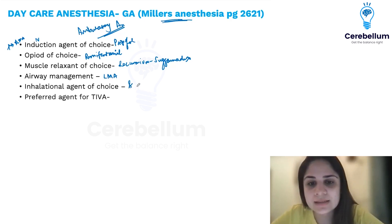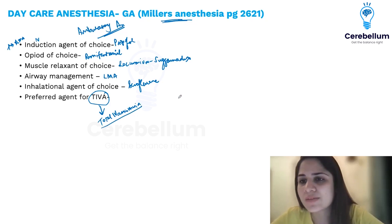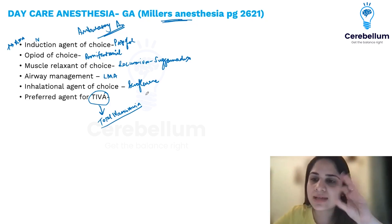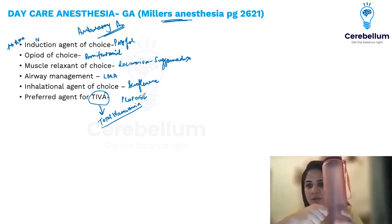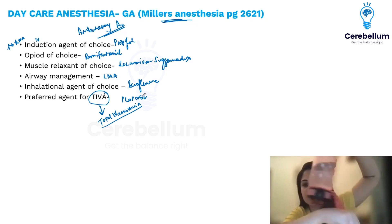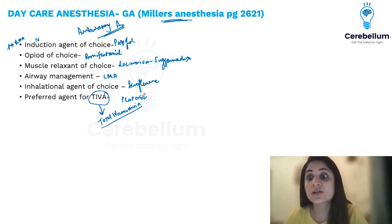The inhalational agent of choice is sevoflurane, the shortest-acting inhalational agent. For TIVA — total intravenous anesthesia — if you don't want to use any gases, the only agent to remember is propofol. You fill a drip with propofol, start the infusion, and the patient sleeps. When you stop and disconnect the drip, the patient wakes up suddenly.